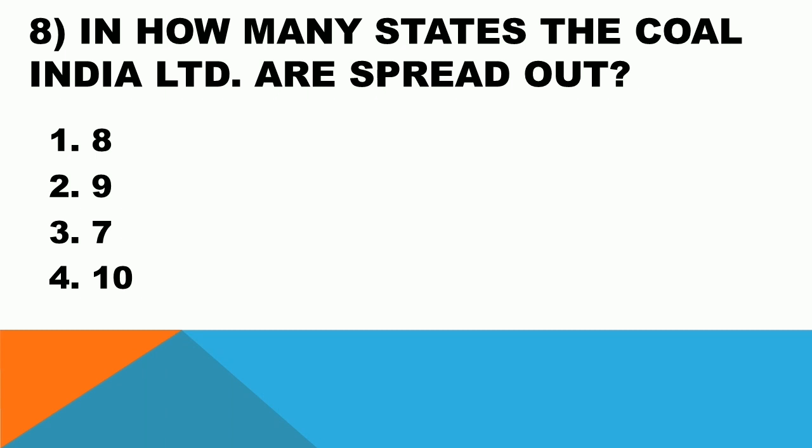The next question is: in how many states is Coal India Limited spread out? Coal India Limited kitne states mein faili hui hai? Option one is seven, option two is eight, option three is nine, option four is ten. The correct option is option two: eight states mein Coal India Limited failii hai.